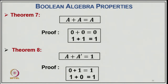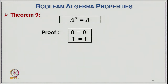Theorem 7: A+A = A. Proof: 0+0 = 0 and 1+1 = 1. Theorem 8: A+A' = 1. Proof: 0+1 = 1 and 1+0 = 1. Theorem 9: A'' = A. Proof: after double complementation, the variable returns to the same value — 0 remains 0 and 1 remains 1.